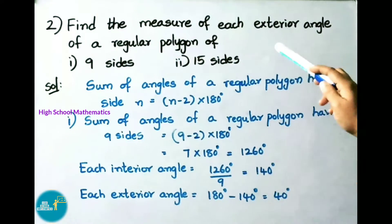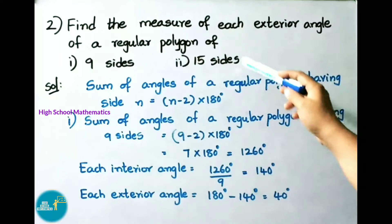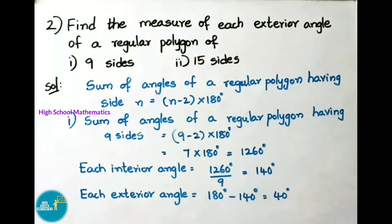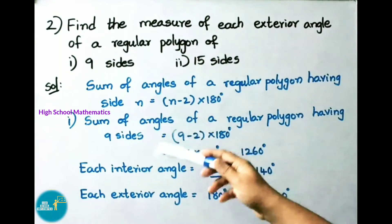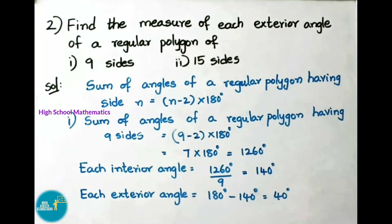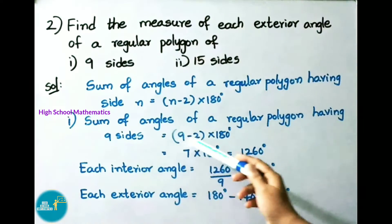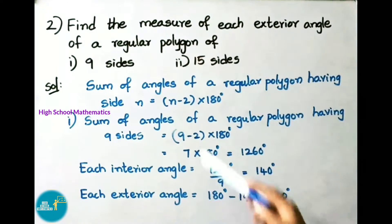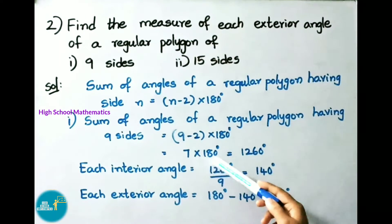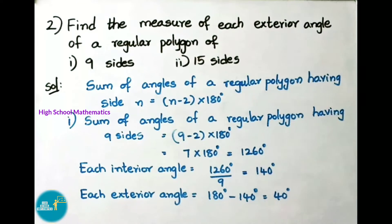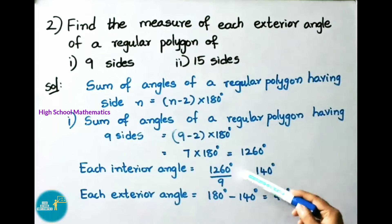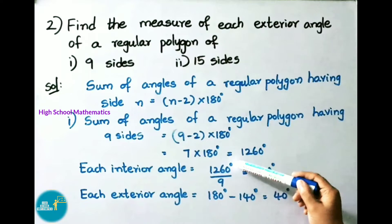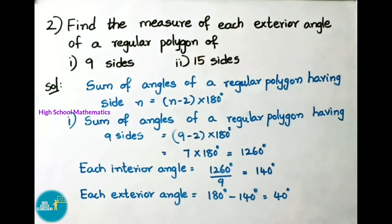See now question number 2: find the measure of each exterior angle of a regular polygon of 9 sides and 15 sides. The sum of angles of a regular polygon having N sides is (N minus 2) into 180 degrees. For 9 sides: (9 minus 2) into 180 equals 7 into 180 equals 1260 degrees. Each interior angle equals 1260 divided by 9, that is 140 degrees.